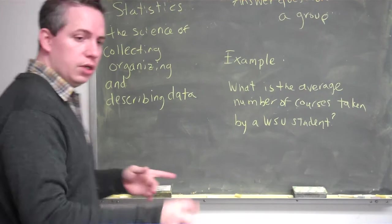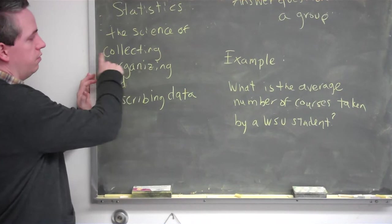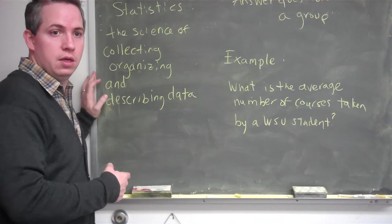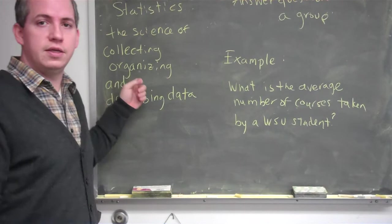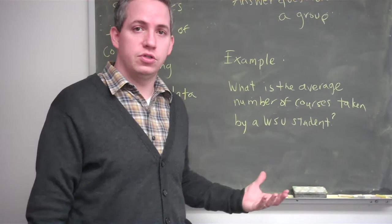What we're going to do to answer this question is think about what it would take. What we'd have to do is collect some data. In order to figure out the average number of courses taken by a Wayne State student, we have to go out and actually find how many courses are taken. There are like 30,000 Wayne State students, so we've got to organize that data — get it in and organize it in some way that makes it easier to answer the question. And then ultimately, we want the answer and we should describe that data.